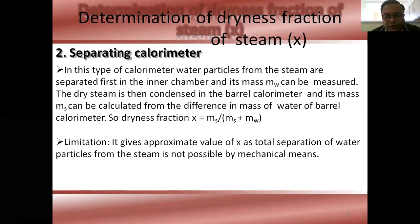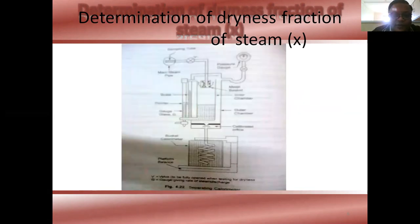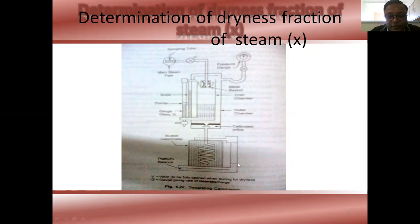The limitation of the separating calorimeter is that it gives only an approximate value of x, because total separation of water particles from the steam is not possible by mechanical means. The separating calorimeter arrangement shows steam passing through the pipe, controlled by a control valve, with a pressure gauge measuring steam pressure. The collected water on the bottom side is measured for the dryness fraction calculation.